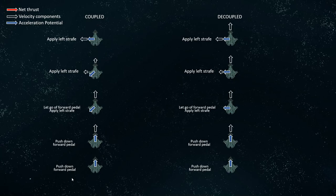Here's a diagram depicting the same thing we just discussed. In coupled mode, starting at rest, we push down the forward pedal and begin to accelerate in the forward direction, as depicted by this blue acceleration arrow. We continue to push down the forward pedal and begin accumulating a forward-directed velocity. When we let go of the forward pedal and simultaneously deflect our left stick to the left, indicating that we would like to strafe leftwards, IFCS will begin decelerating us in the forward direction — accelerating us backwards to cancel out our previous direction's momentum — and at the same time, begin applying a leftward acceleration by firing the thrusters on the right side of our ship. The combination of leftward and backward acceleration will be depicted by this summary vector.